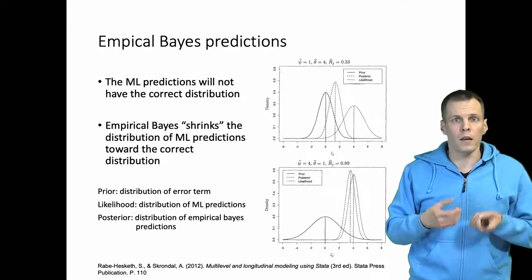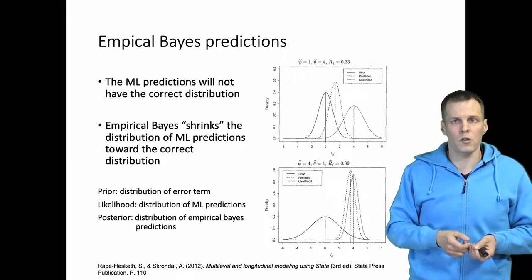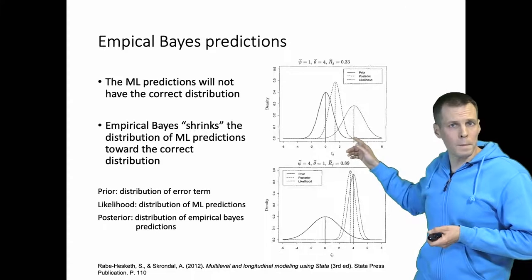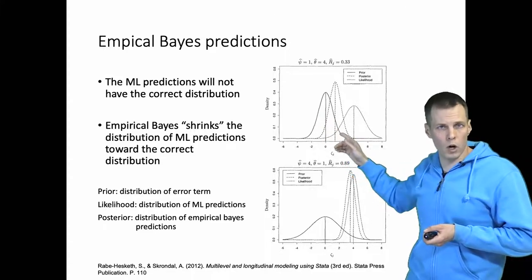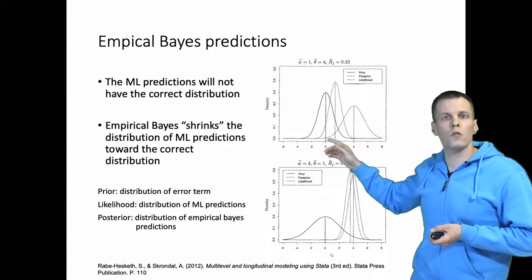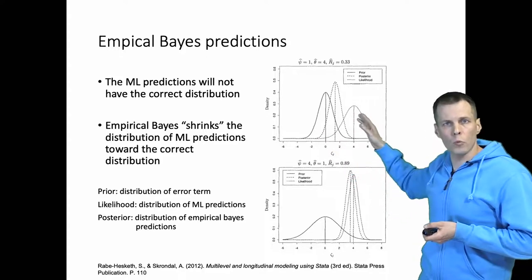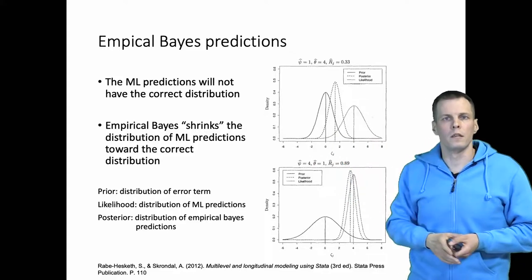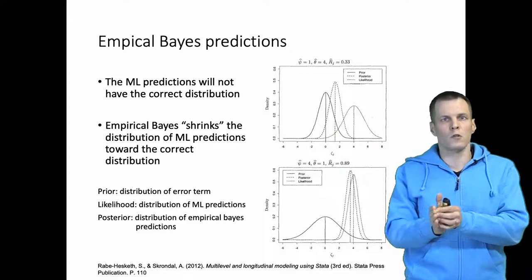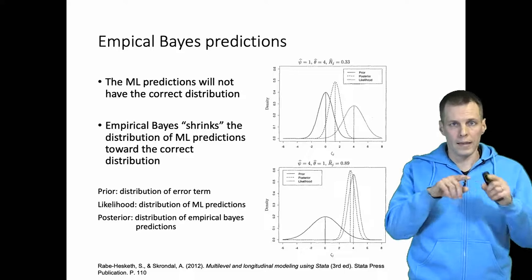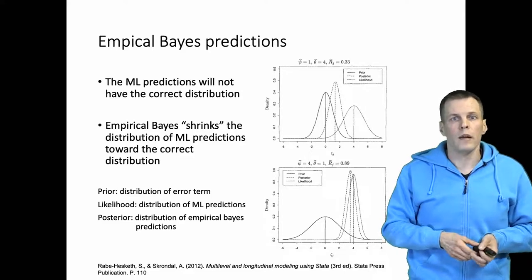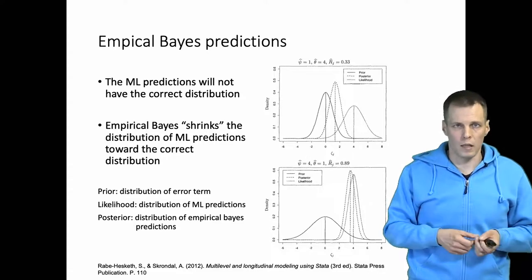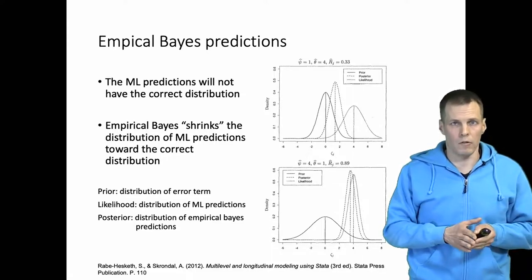The idea—I don't go into the math—but the idea of empirical Bayes prediction is that you take the distribution based on the model and then you take the actual observed distribution of the residuals and then you shrink, you move the distribution of residuals toward the actual estimated distribution and that gives you estimates that have more desirable statistical properties than the maximum likelihood estimates.